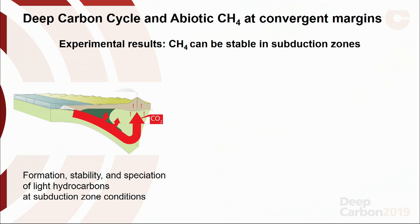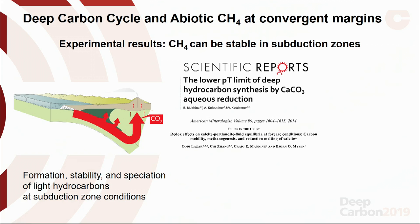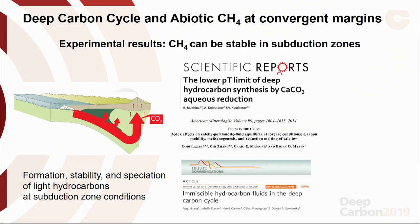Experimental results. The DCO decade has witnessed very important experimental results on this topic. Just a few examples: PT limits of deep hydrocarbon synthesis by calcium carbonate aqueous reduction; redox effects on calcite-portlandite-fluid equilibria at high-pressure conditions; and immiscible hydrocarbon fluids in the deep carbon cycle. This is very important because almost for the first time, we have an idea about how these gases form, their stability field, and their speciation at subduction zone conditions.